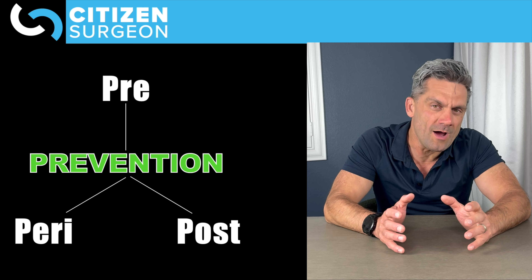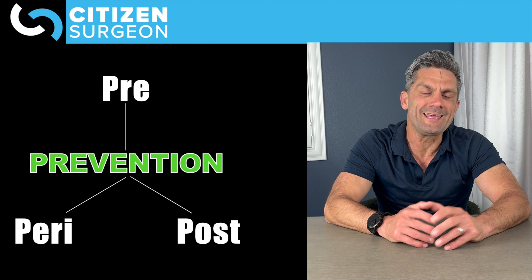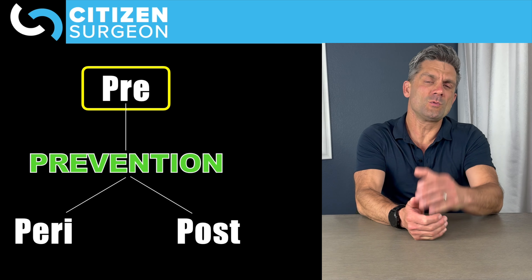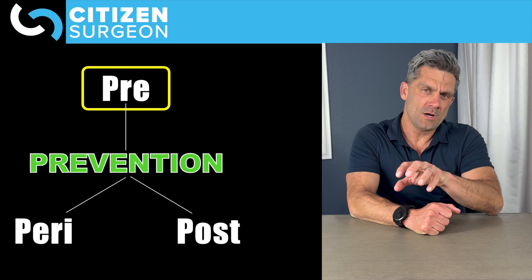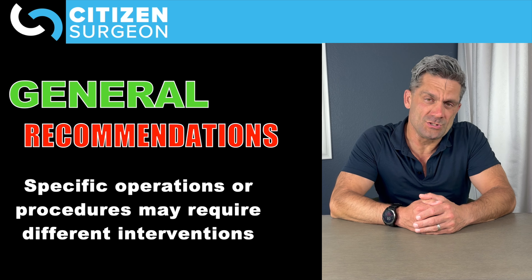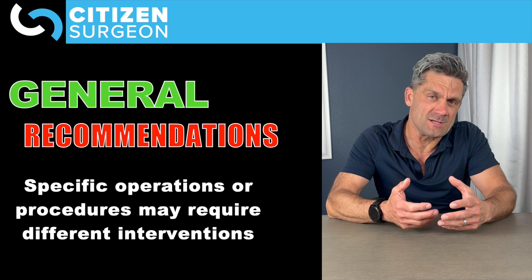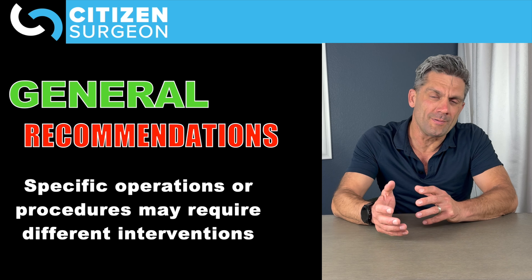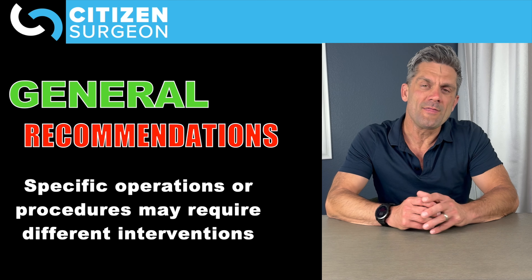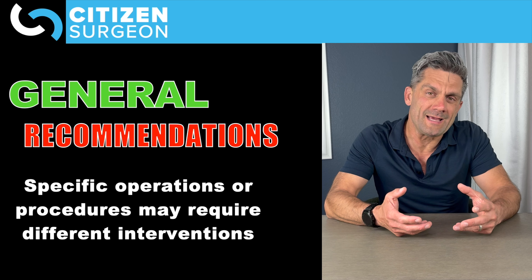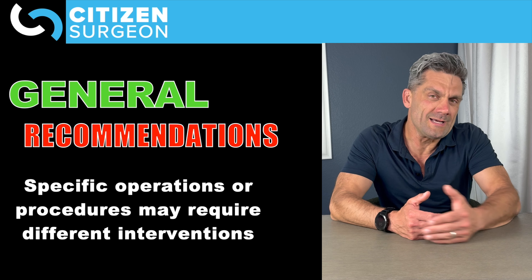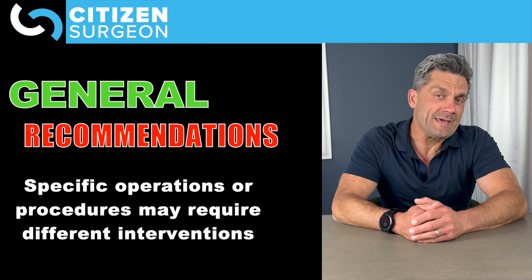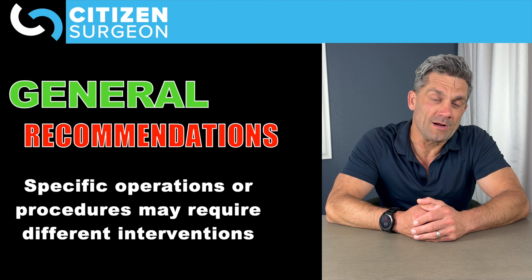There are a couple of things we might not think about entirely when considering surgical site infection. The first is: you've got to have a clean operating room. After every procedure, environmental services come in, give the operating room a deep clean, especially all high-touch areas, so that we can have a clean, safe environment to perform surgical operations with the lowest risk of SSI possible.